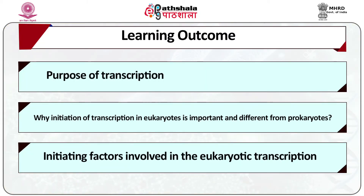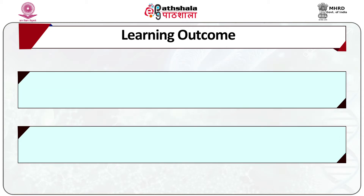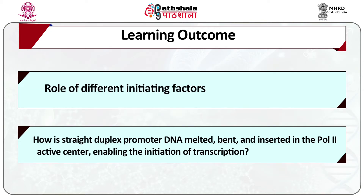Learning Outcomes. First, the purpose of transcription. Second, why initiation in transcription in eukaryotes is important and how it is different from that of prokaryotes. Third, initiating factors involved in eukaryotic transcription. Fourth, role of the different initiating factors. Fifth, how is straight duplex promoter DNA melted, bent, and inserted in the polymerase 2 active center enabling the initiation of transcription.